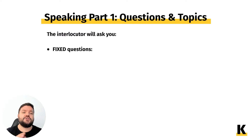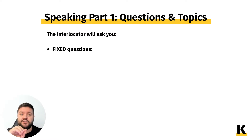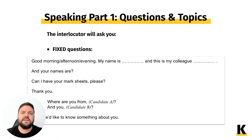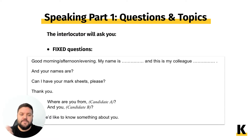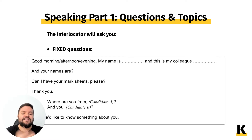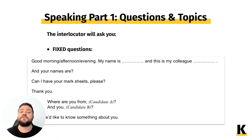At the beginning, the interlocutor will ask a series of fixed questions. For example, they'll say something like: 'Good afternoon, my name is Lewis Wadley and this is my colleague — your names are?' Then they'll ask for your mark sheets, which is a piece of paper with your name and candidate number where the assessor writes your scores. After that: 'Where are you from, Candidate A? And you, Candidate B? First, we'd like to know something about you.'